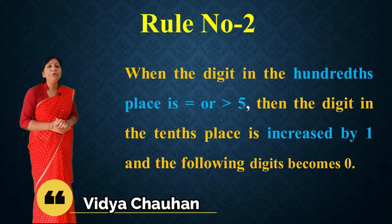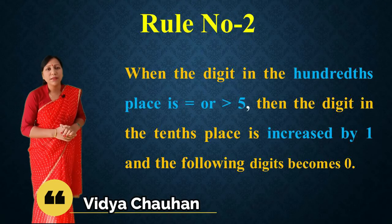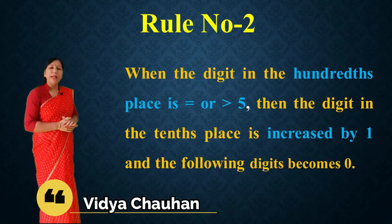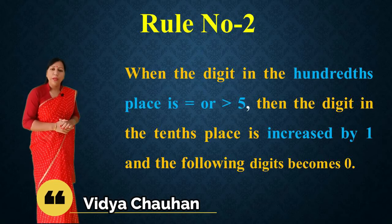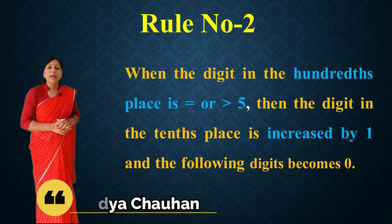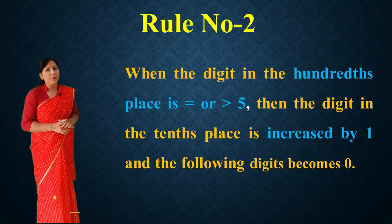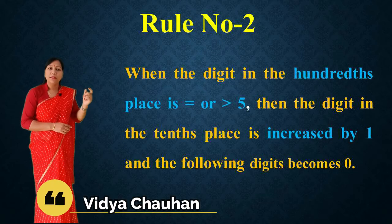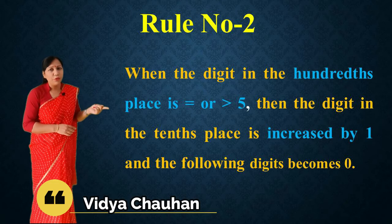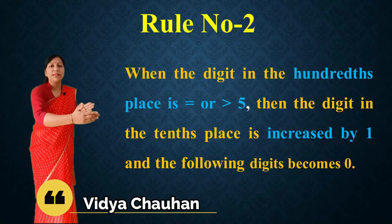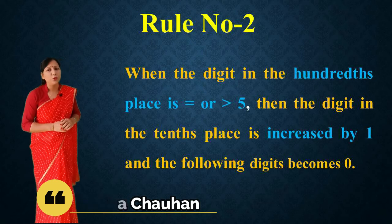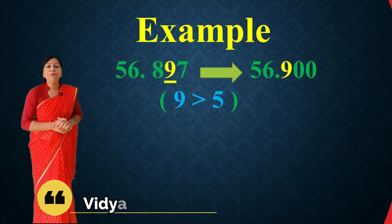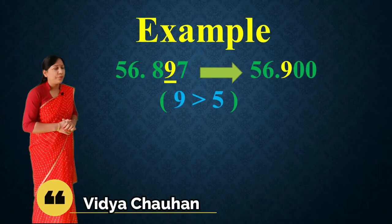Now, the opposite case: what if the digit at the hundredths place is greater than or equal to five? Rule two says: when the digit in the hundredths place is equal to or greater than five, the digit in the tenths place is increased by one and the following digits are reduced to zero.